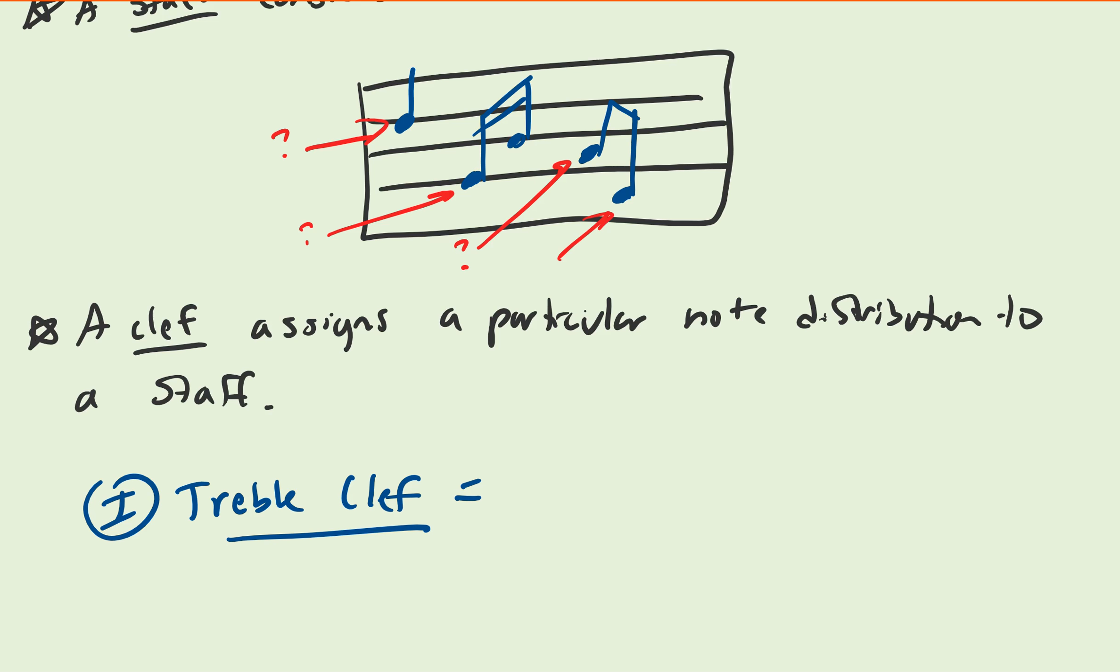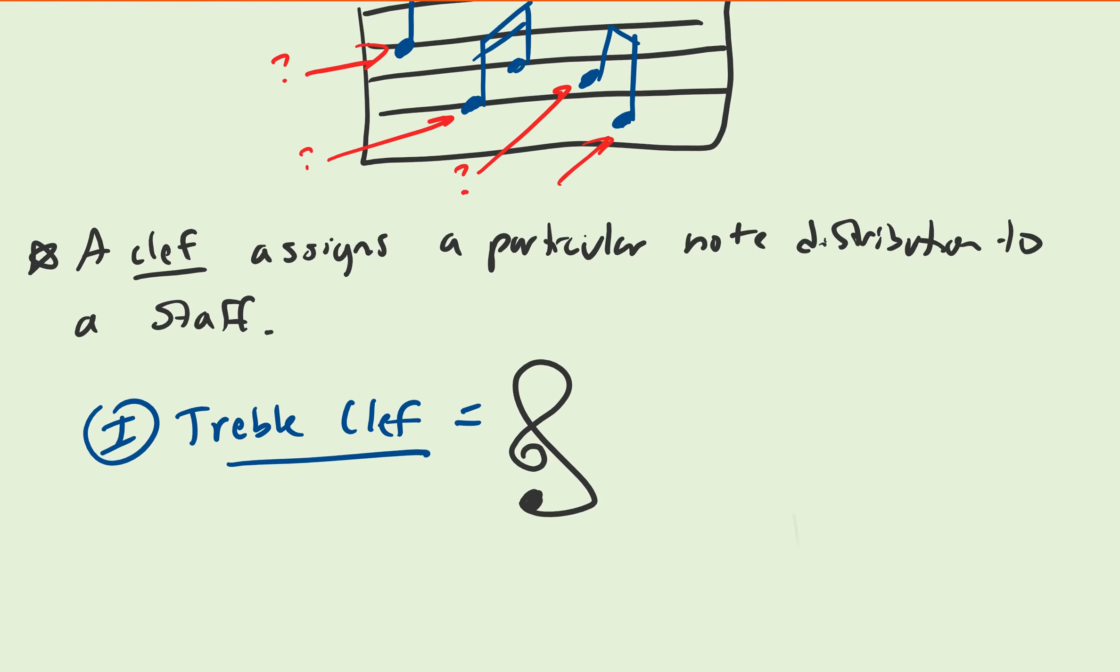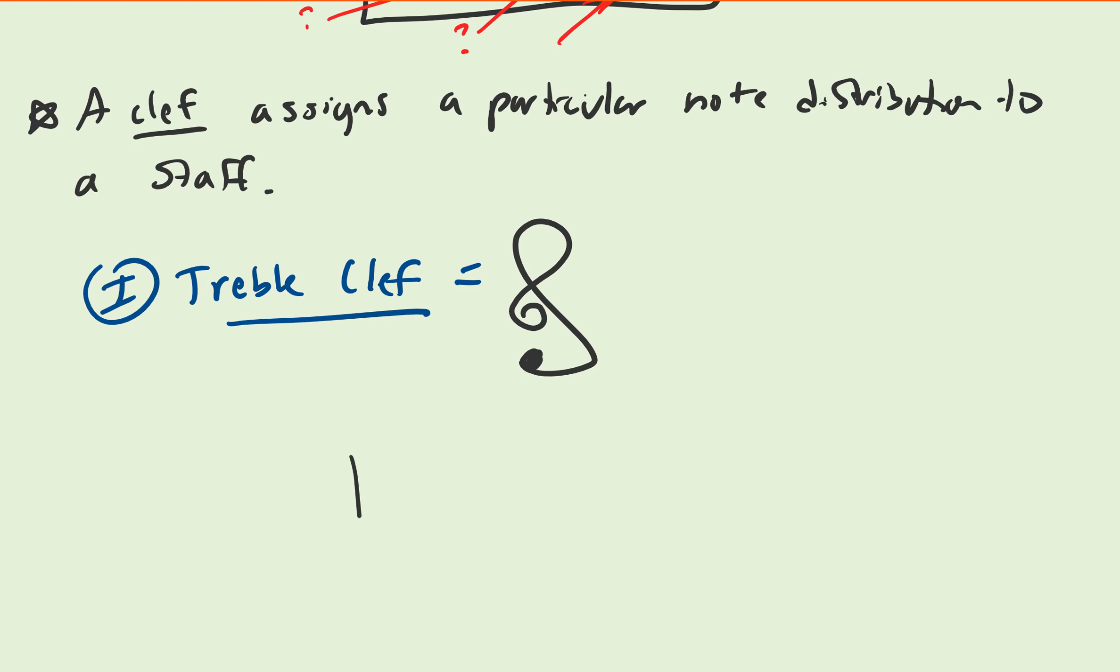A treble clef, in terms of writing, looks similar to this. What a treble clef does is it takes a staff and it traditionally is written similar to this. This little loop that it has here pretty much circles around this first line.